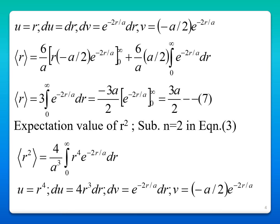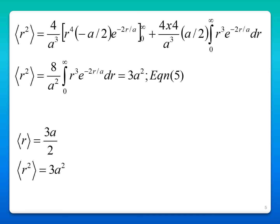Next, we find the expectation value of r squared. Substituting n equal to 2, the expectation value of r squared is equal to 4 by a³, integral from 0 to infinity r power 4, e power minus 2r by a, dr. Once again applying integration by parts, you end up with an integral from 0 to infinity r³ e power minus 2r by a, dr. This has already been derived, so substituting that value gives the expectation value of r squared equal to 3a squared.